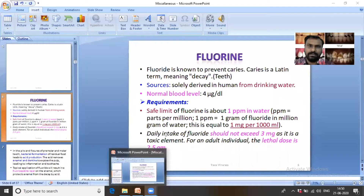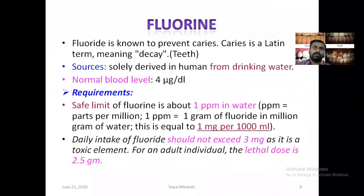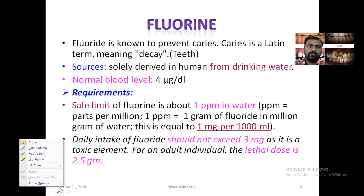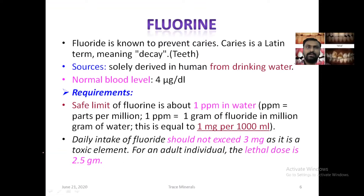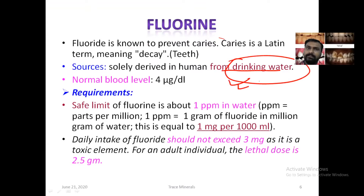So what is fluorine? Fluoride is known to prevent caries. Caries is a Latin term meaning decay, so fluorine will prevent the decay of the teeth. Its source is solely derived from drinking water, which is the main source of fluorine. If the fluorine level in drinking water is more, it will lead to the condition called fluorosis.